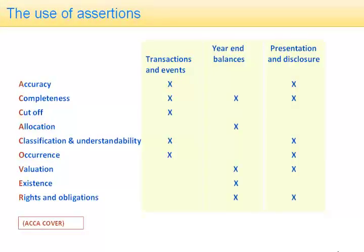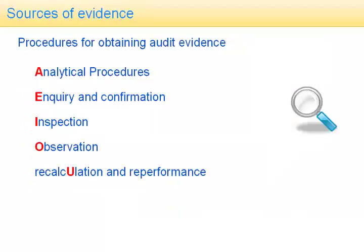So what sort of evidence is available to support the assertions? There are only five sources of evidence — no other source exists. First, we can perform analytical procedures: broadly speaking, that's the use of ratios, trends, and comparisons. So if motor vehicles last year were $200,000 and this year are $200,000, that's giving some evidence that the figure is probably reasonably accurate. But if last year motor vehicles were $20,000 and this year $200,000, we would probably want to look for additional evidence in quite a big way.